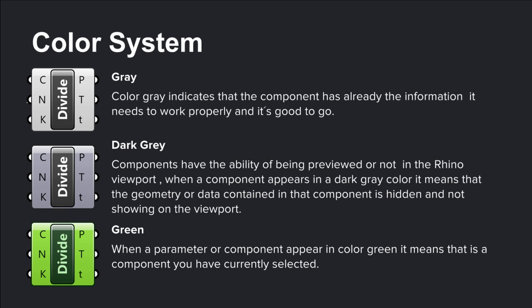Grasshopper also uses a color system to indicate the current state of a component. Components with a gray color indicate that the component already has the information it needs to work. Components also have the ability of being previewed or not on the Rhino viewport. When a component appears in a dark gray color, it means that the geometry or data contained inside that component is hidden and won't be showing on the viewport. And whenever we select a component with our mouse, it will always appear in a green color.